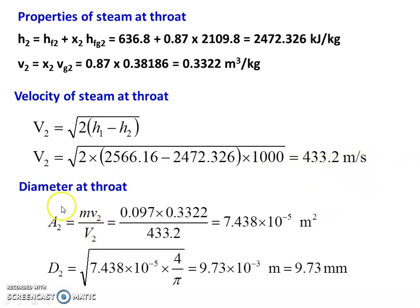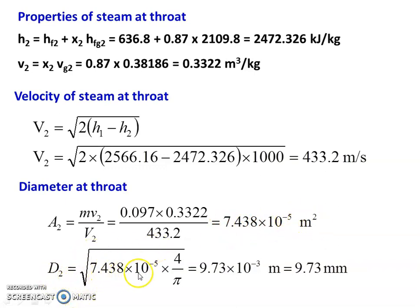The throat area A2 equals mass flow rate into specific volume divided by velocity, which is 0.097 multiplied by 0.3322 divided by 433.2 equals 7.438 into 10^-5 meter square. The throat diameter equals square root of (7.438 into 10^-5 into 4/π) equals 9.73 into 10^-3 meter, which is 9.73 millimeter.